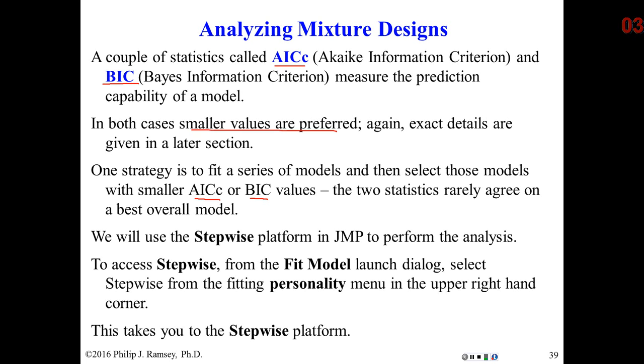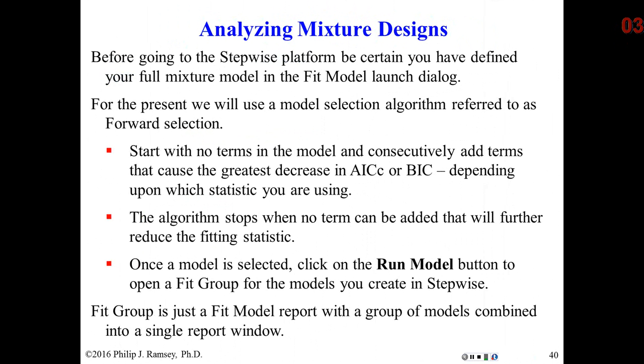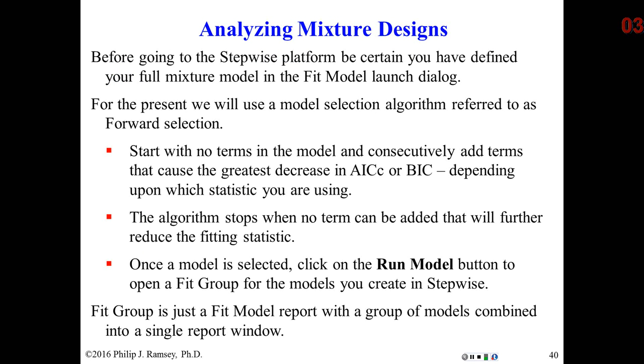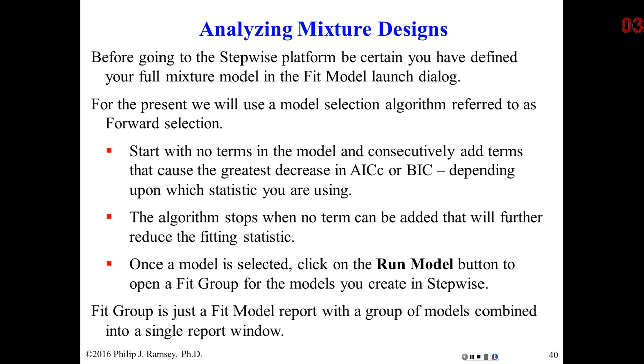And what we're going to do is use a method, a simple method, to try to look at some models and decide which of the models might be best. And we're going to do this in what's called the Stepwise Platform in JMP. Again, later on in the course, we're going to make heavy use of this platform for analysis. So basically, we're going to use something called Forward Selection. And at this point, I'm simply going to go over to the JMP software and work through the analysis.